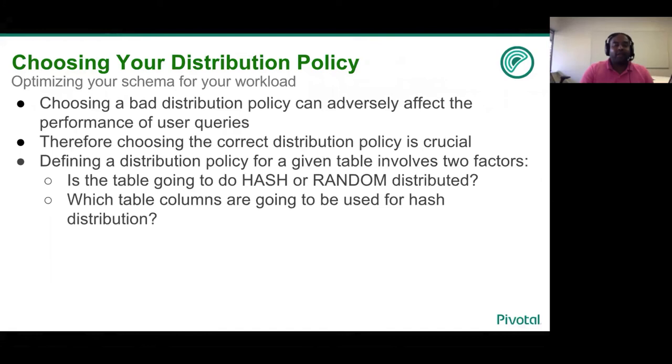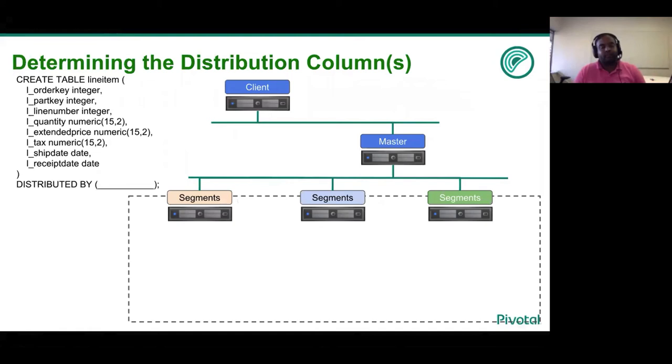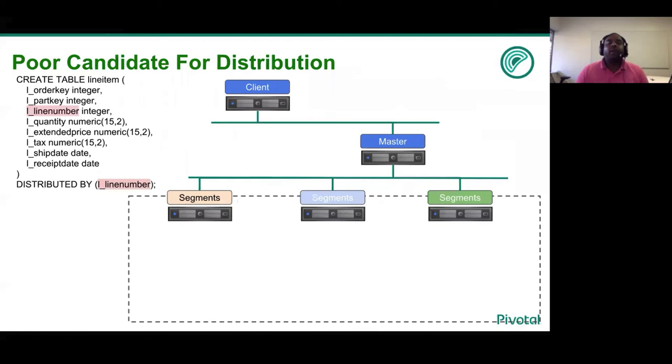So let us look at another table called line item. The line item table maintains a list of line items inside a given order. So let's pick a poor distribution policy of hashing on line number. So let's make another assumption that each order has only one line item, therefore only one line number. If line number is then used for the distribution policy, all of the line items will land up on segment one.